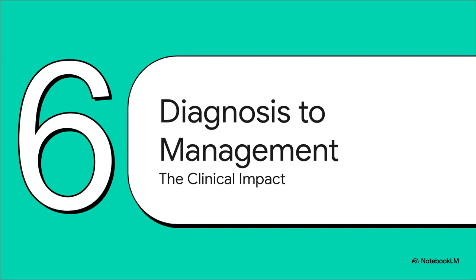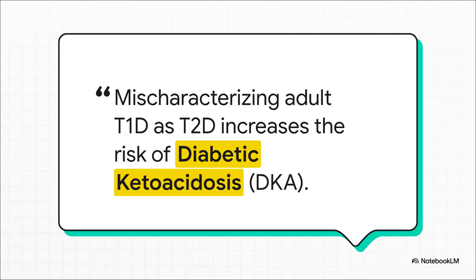Let's bring this all together and talk about what this means at the bedside. An accurate diagnosis isn't just an academic exercise — it's the foundation for safe, effective care, and getting it right can change a patient's life. As the guidelines state: mislabeling an adult with autoimmune diabetes as type 2 can directly lead to holding off on insulin or not giving enough, which can then trigger a life-threatening episode of DKA. The stakes just couldn't be any higher.